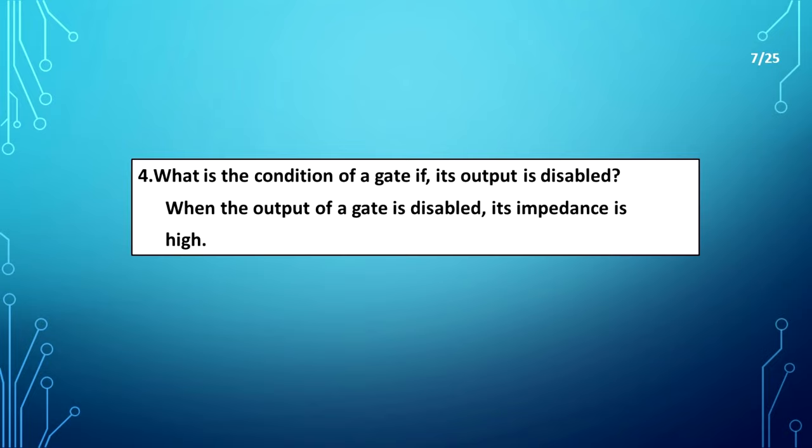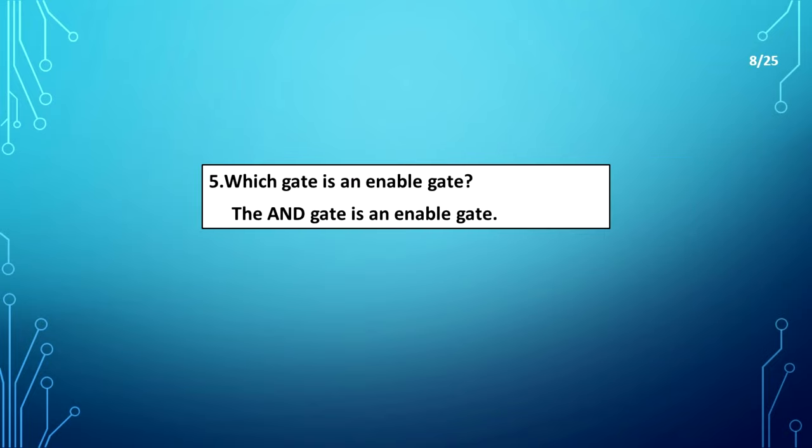What is the condition of a gate if its output is disabled? When the output of a gate is disabled, its impedance is high. Which gate is an enable gate? The AND gate is an enable gate.